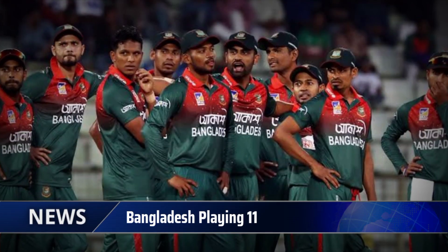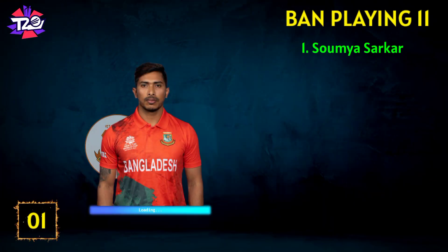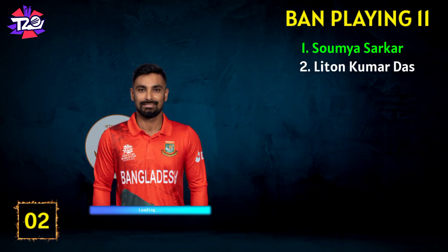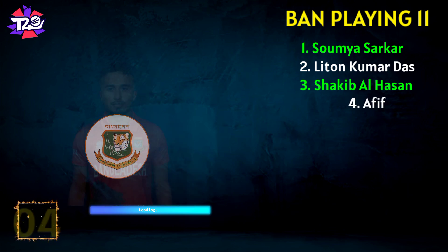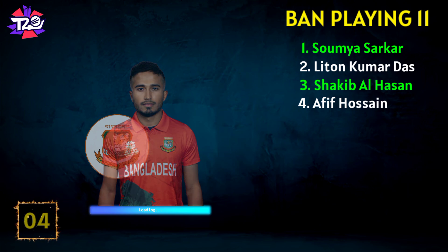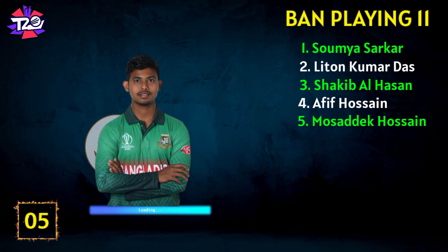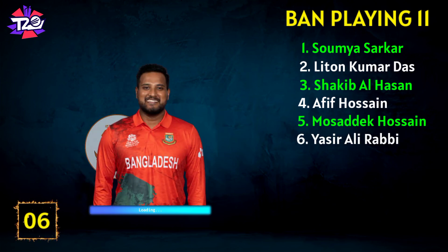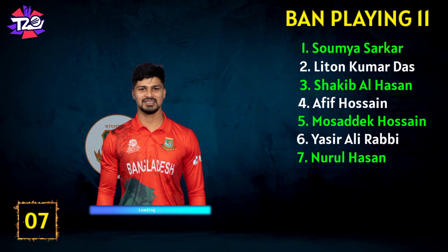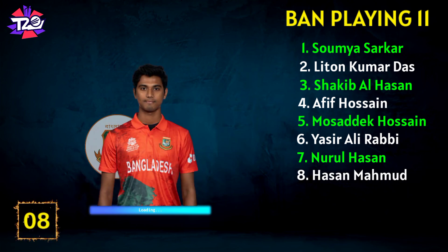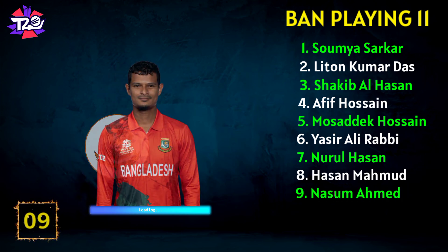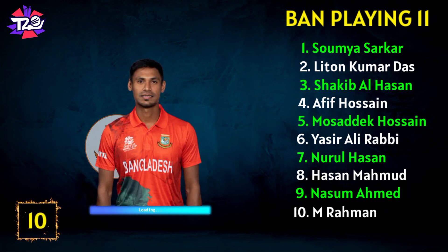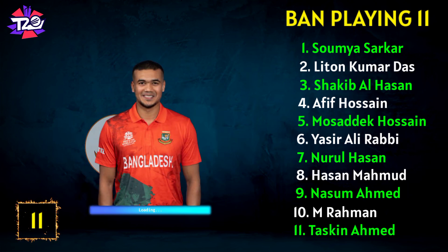Bangladesh team final playing 11: No.1 Somos Harkar, No.2 Litton Kumar Das, No.3 Saki Balhasaan, No.4 Afib Husein, No.5 Musaddiq Husein, No.6 Yazir Ali Rabbi, No.7 Nurul Hasan, No.8 Hassan Mahmood, No.9 Nasum Ahamid, No.10 Mustafijur Rahman, No.11 Taskeen Ahamid.